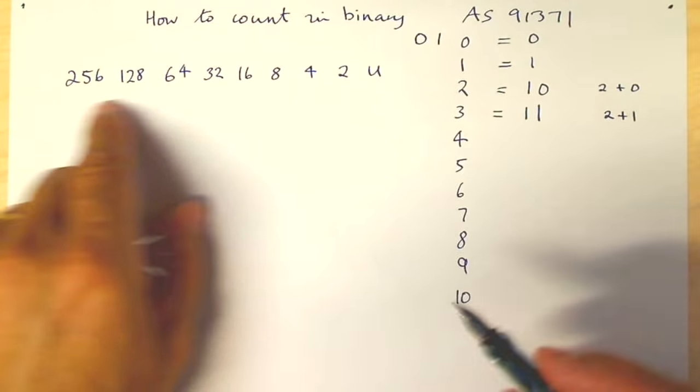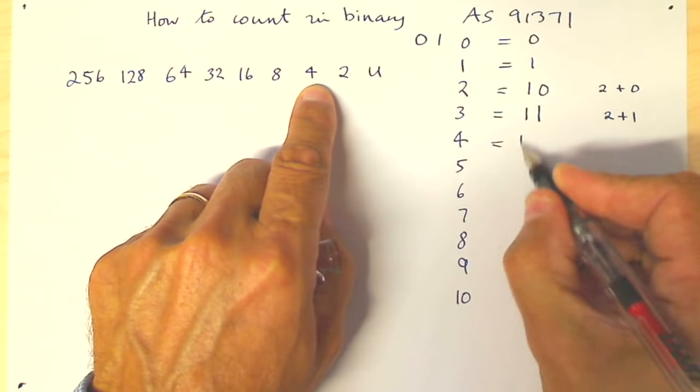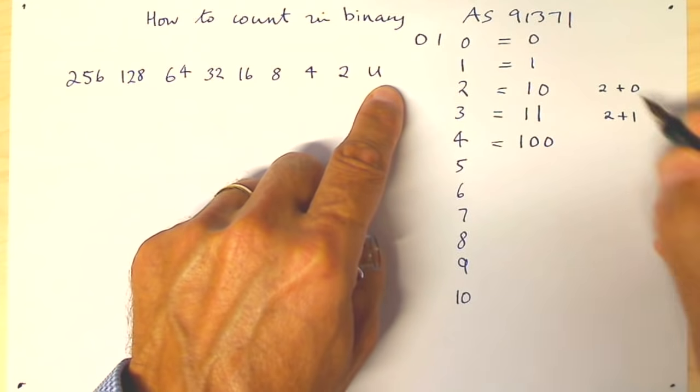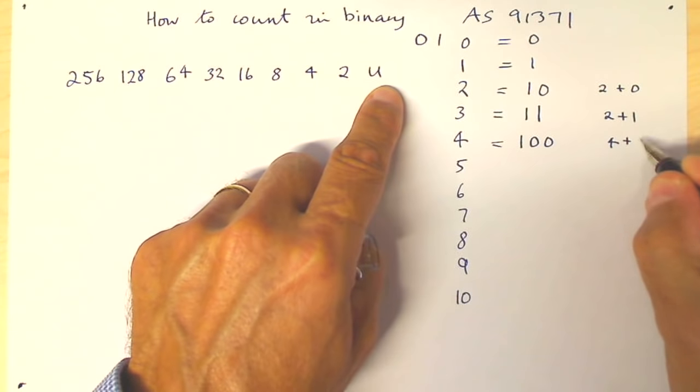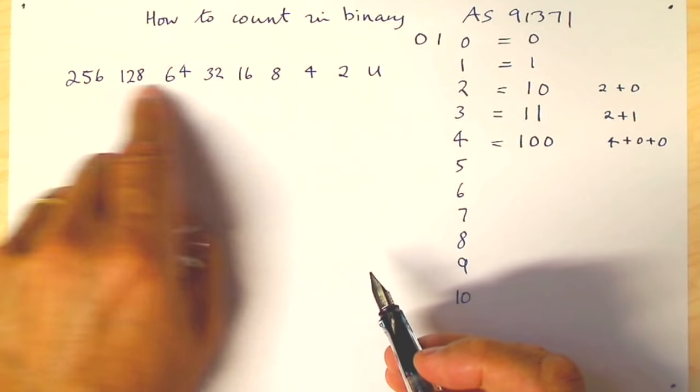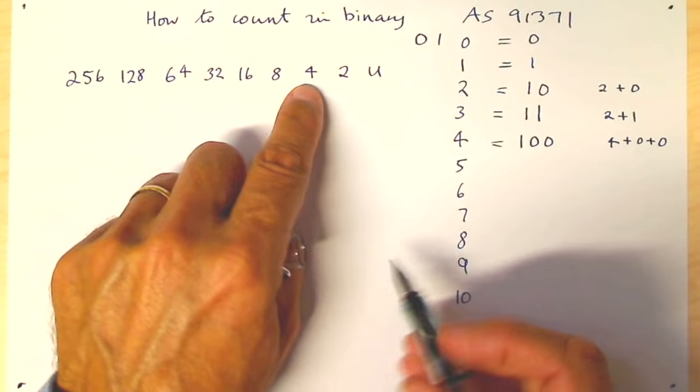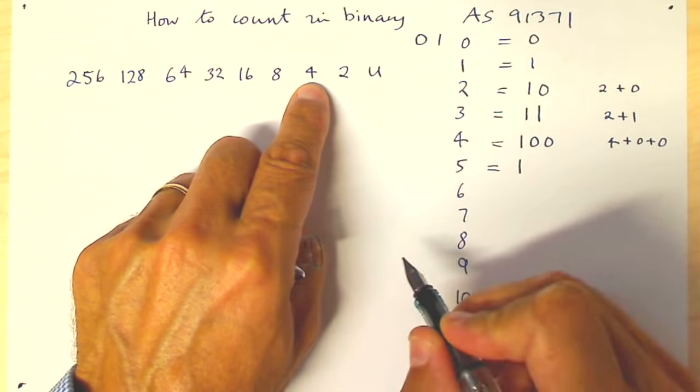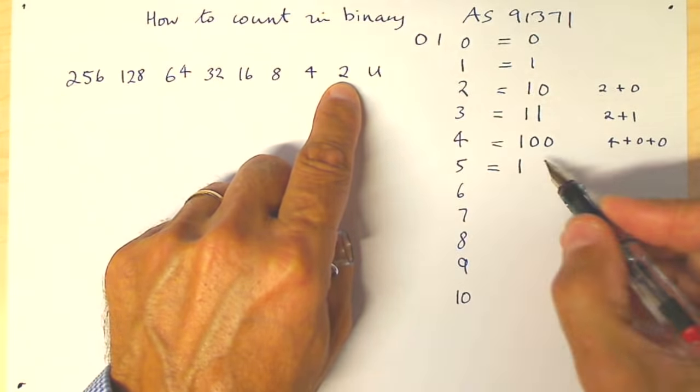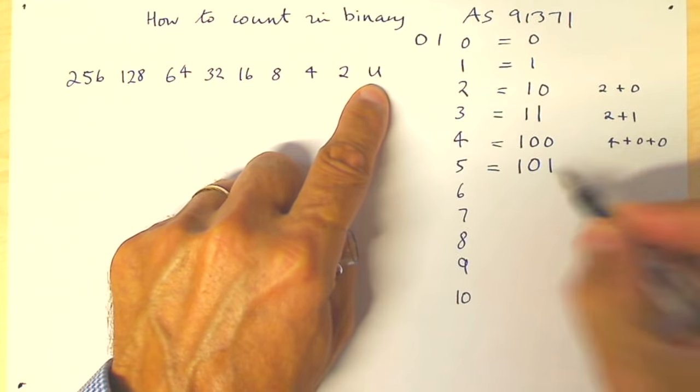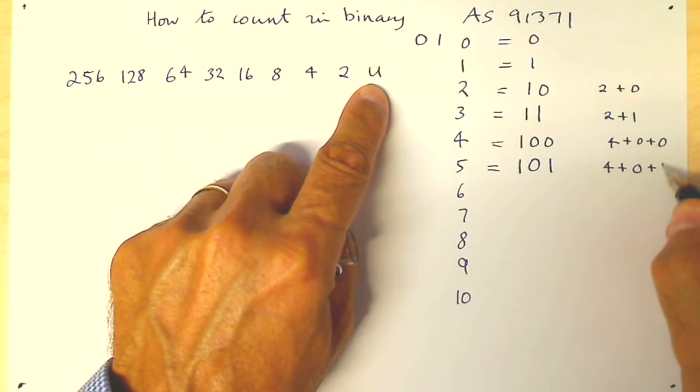So let's do 4. We need a 4, no 2s, no units. How it's calculated: 4 plus 0 plus 0. Let's do 5. An 8 is too much. So to make up a 5, we would need a 4. Now 4 and 2 is 6, so that's too much. So we don't need a 2, and we need a unit. So how it works out is 4 plus 0 plus 1.